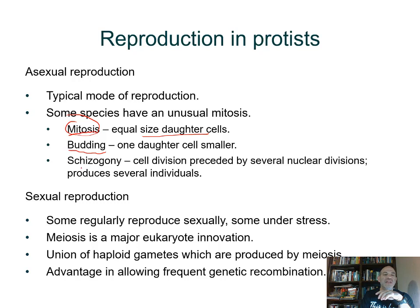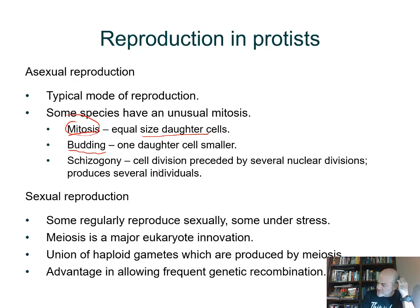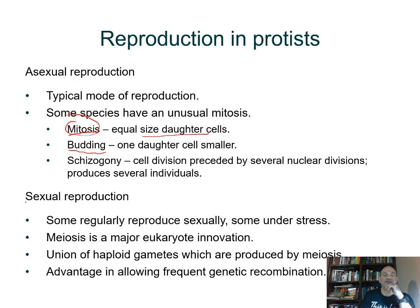There is also schizogony, where the cell divides only after the nucleus has divided several times. The nucleus divides and houses several nuclei, and then the cell divides to produce several individuals. And then there is sexual reproduction even in these single-celled organisms — they manage to combine a set of chromosomes from two different parent cells.